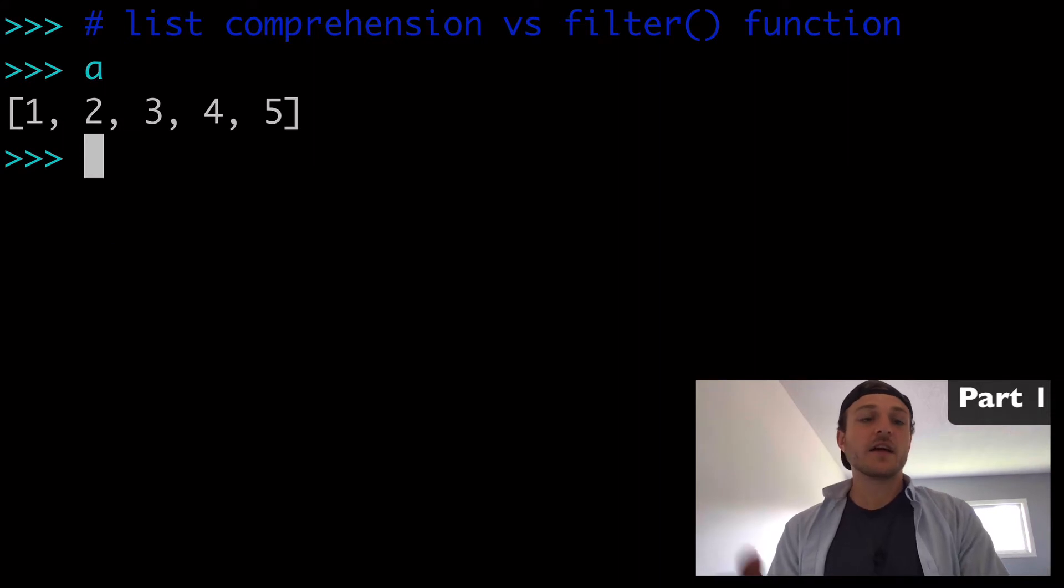I created a list here, variable a, and let's say that we wanted to filter out everything below 2. So we wanted to return 3 through 5. So how would we do that with a list comprehension? And then how would we do that with the filter function?